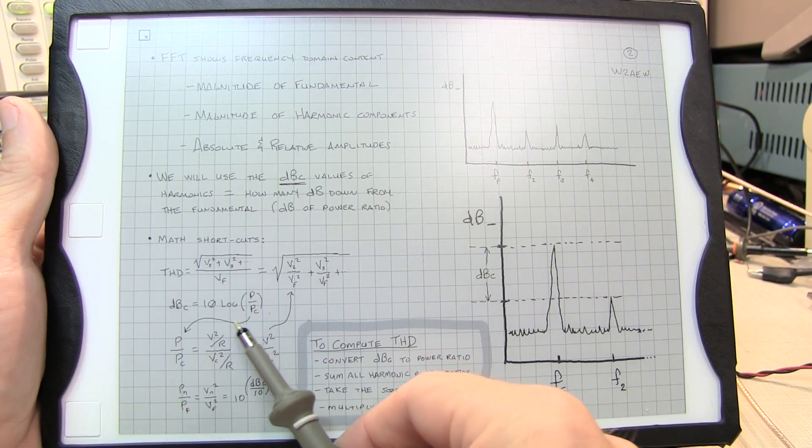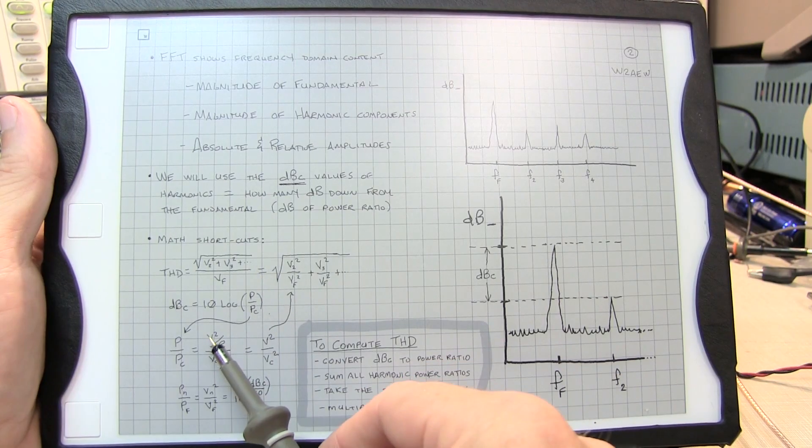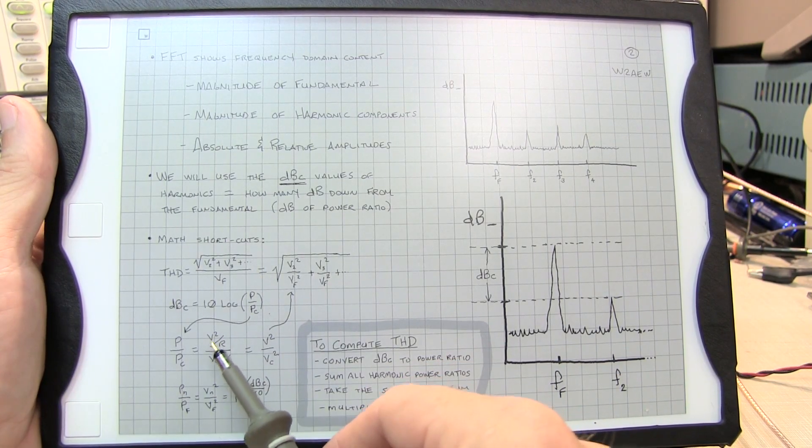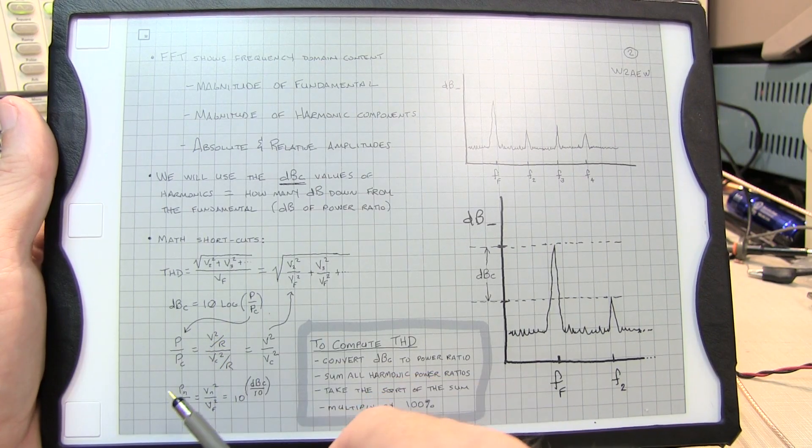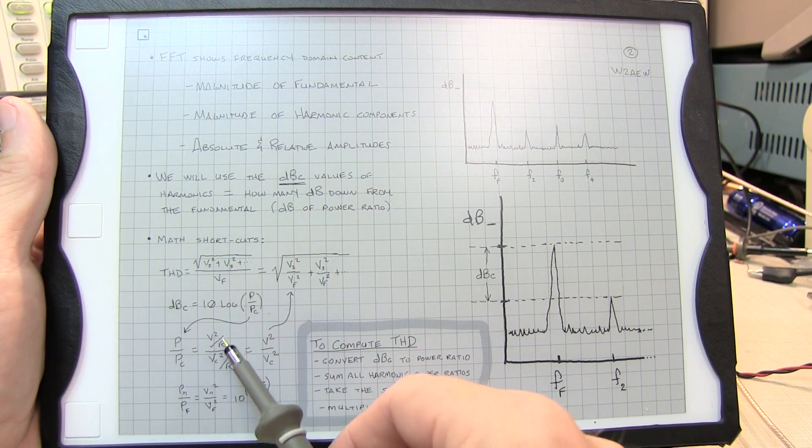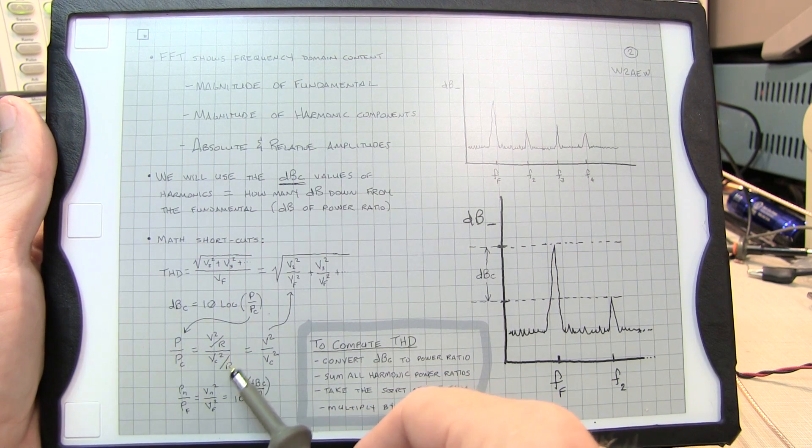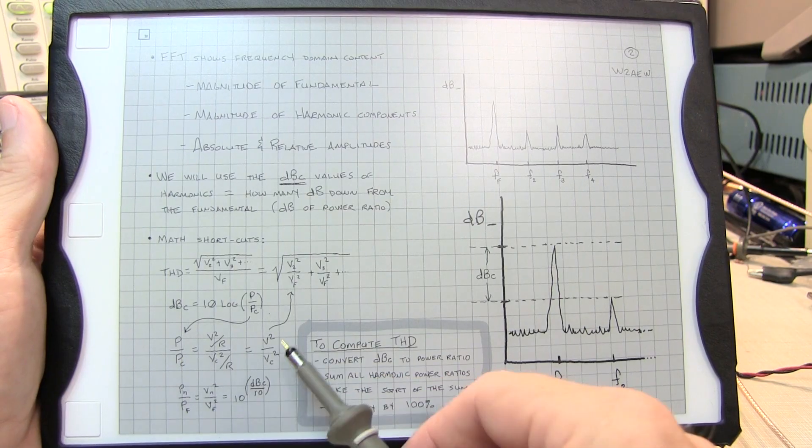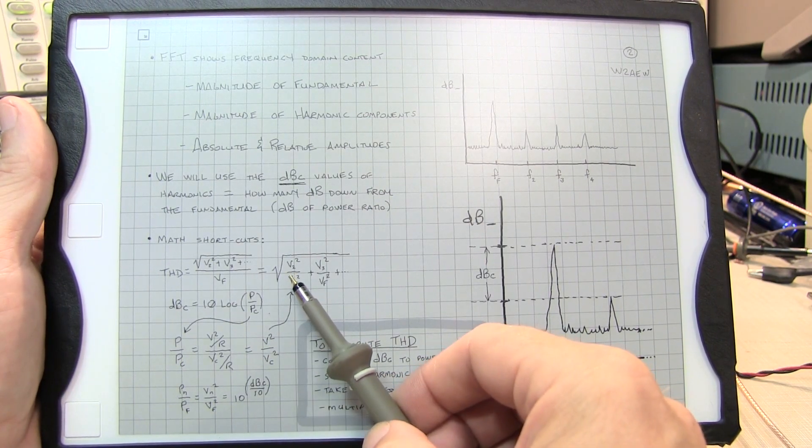If we take a look at that piece of it, it's a ratio of two powers. The power in this case is V squared over R, whatever that RMS voltage is squared divided by the load impedance. That applies in both cases. Now in both cases, the load impedance is the same, so that cancels out. So that power ratio is equal to the ratio of the squared voltages. Well, that's exactly what we have here.